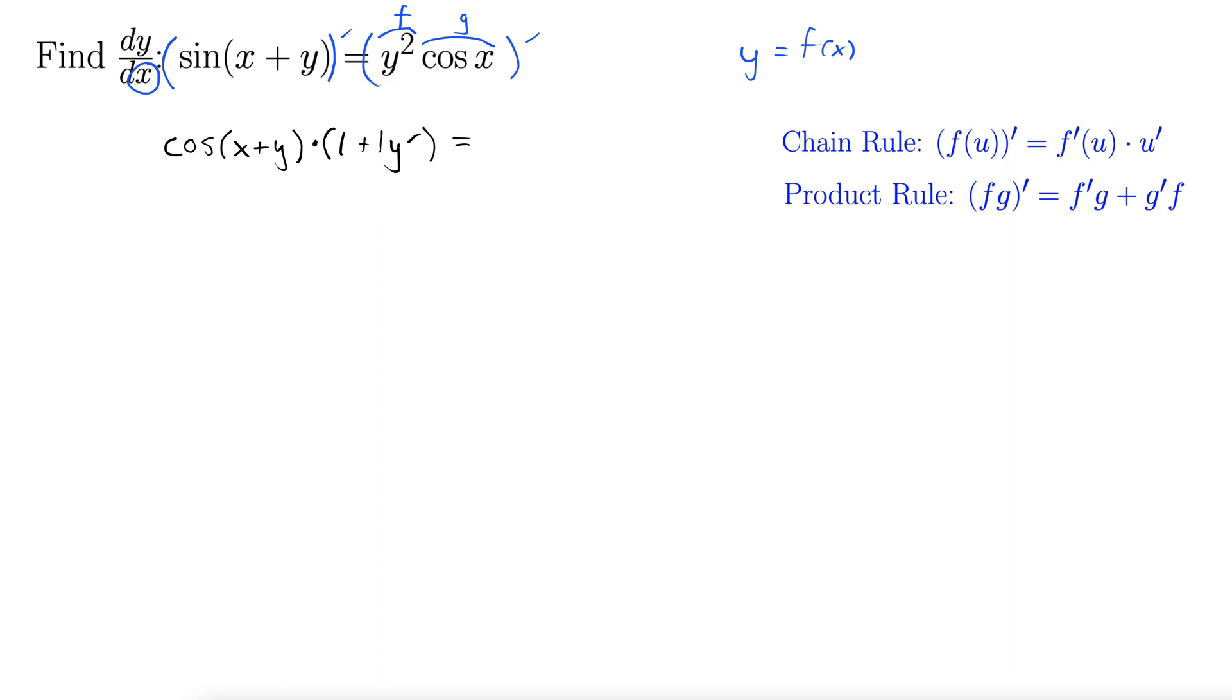So we'll do f prime g. So f prime in this case will be 2y and here we are again. So we put on the y prime. We multiply by y prime. That's the chain rule essentially on y. So f prime g we leave g alone cos x plus g prime. The derivative of cos is negative sine, sine x times f, y squared.